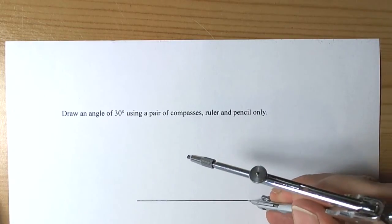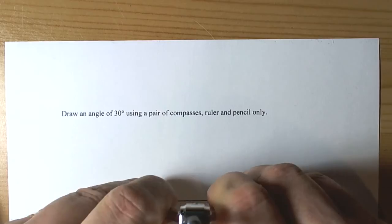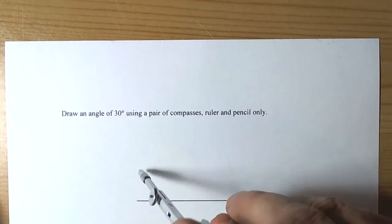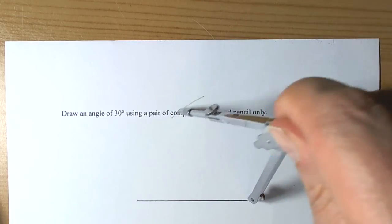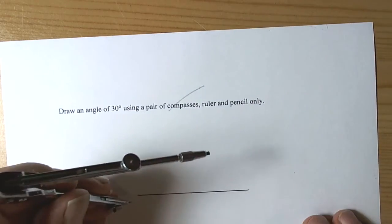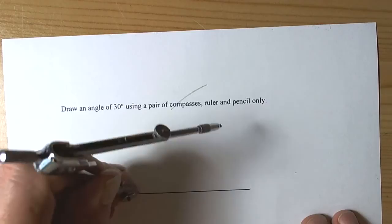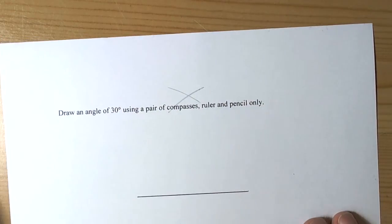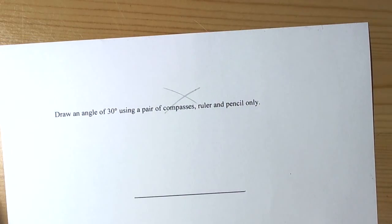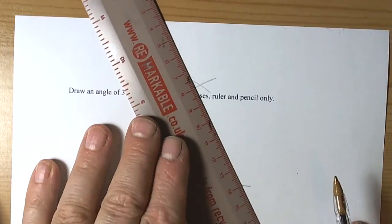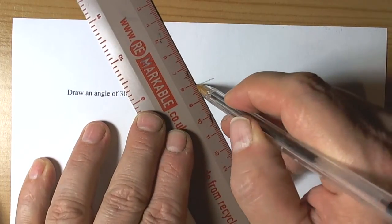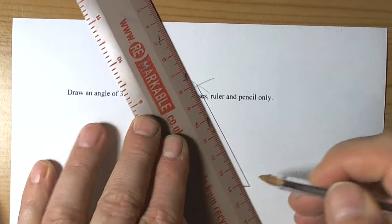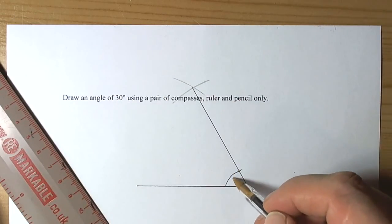I create an equilateral triangle by making the compasses have the same length as the length of the line, draw my arc above, draw my arc that crosses, and in doing that I can join together. Because that's the side of an equilateral triangle, then this angle here will be 60 degrees.